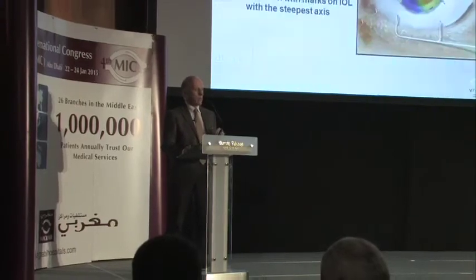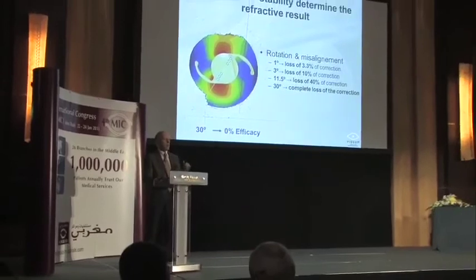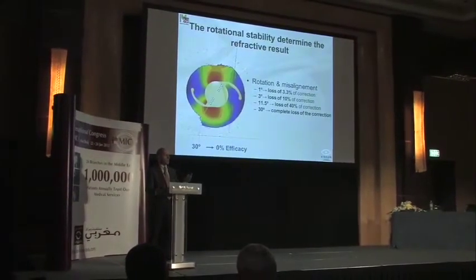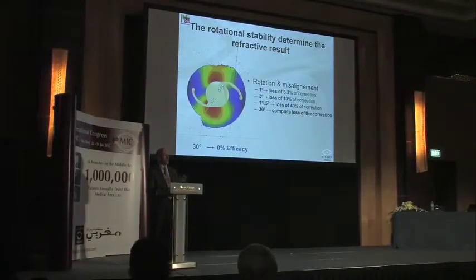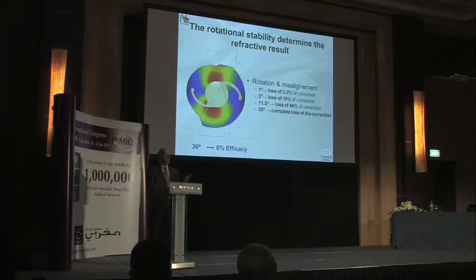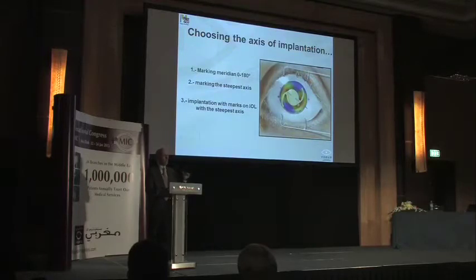Misalignment of 33 degrees causes a total loss of the toric power of the lens, while misalignment of 3 to 5 degrees makes significant losses and undercorrection of 0.5 to 1 diopter. So alignment is important. I still do my alignment clinically: I mark at the slit lamp in the 180-degree meridian with a pen, and then intraoperatively this serves as a reference to detect and mark the alignment axis of the lens.